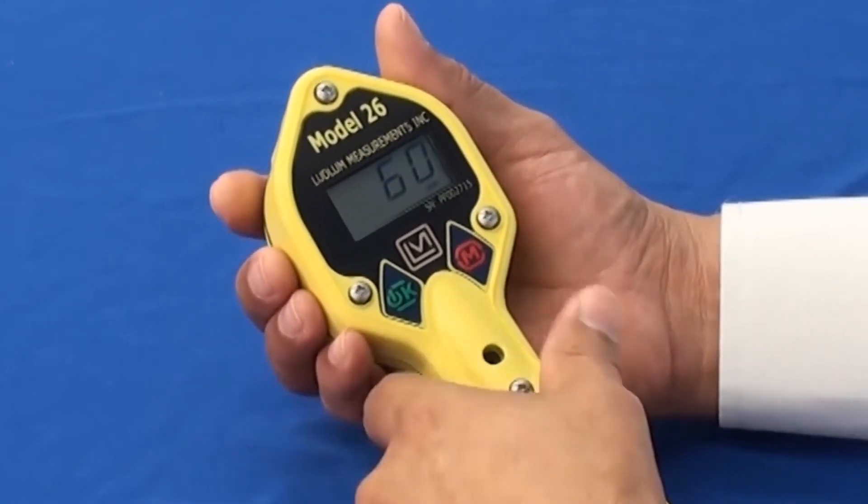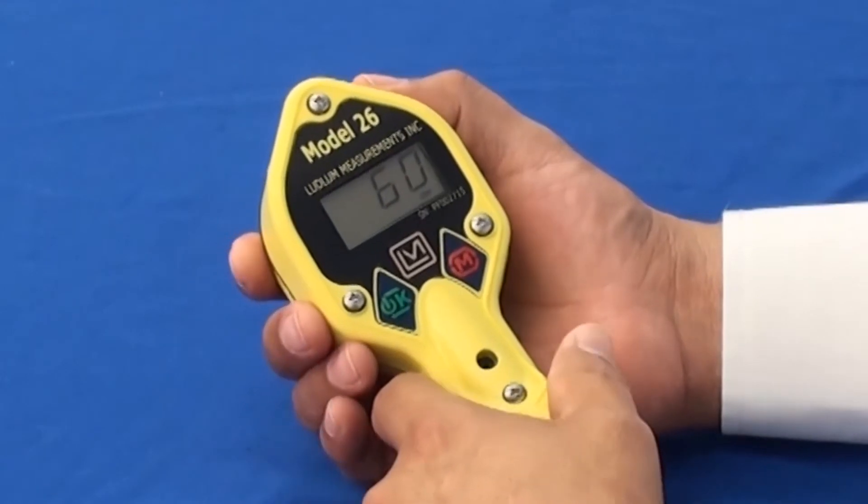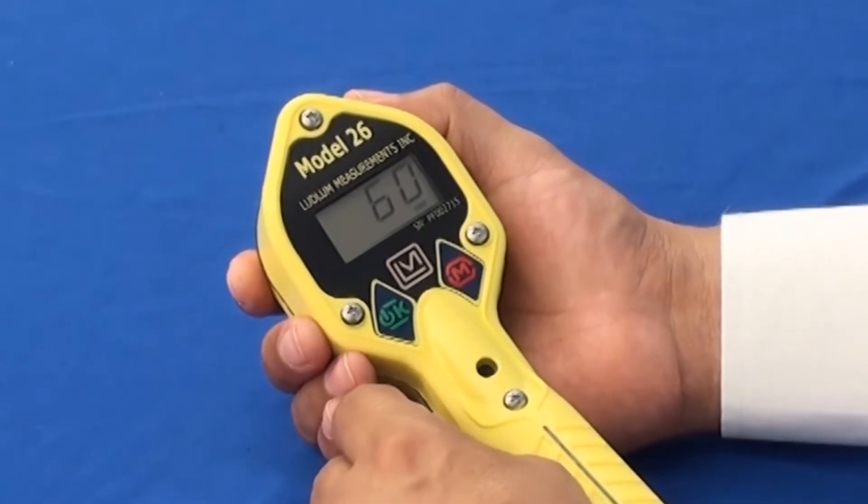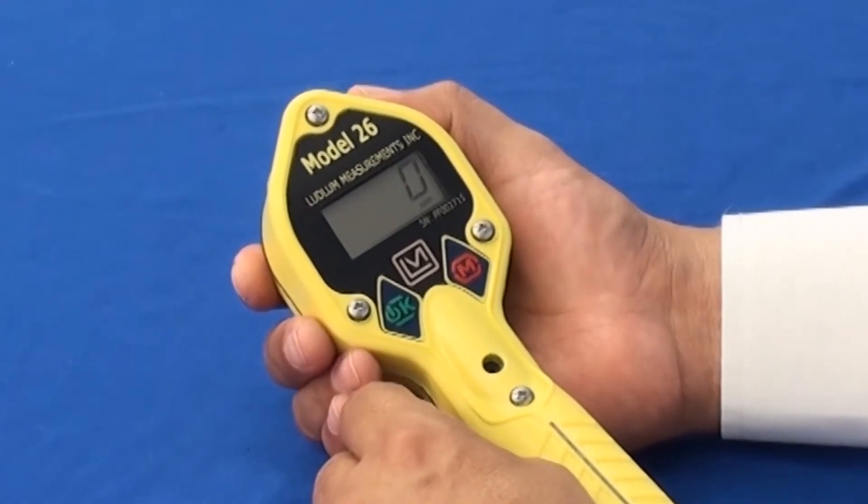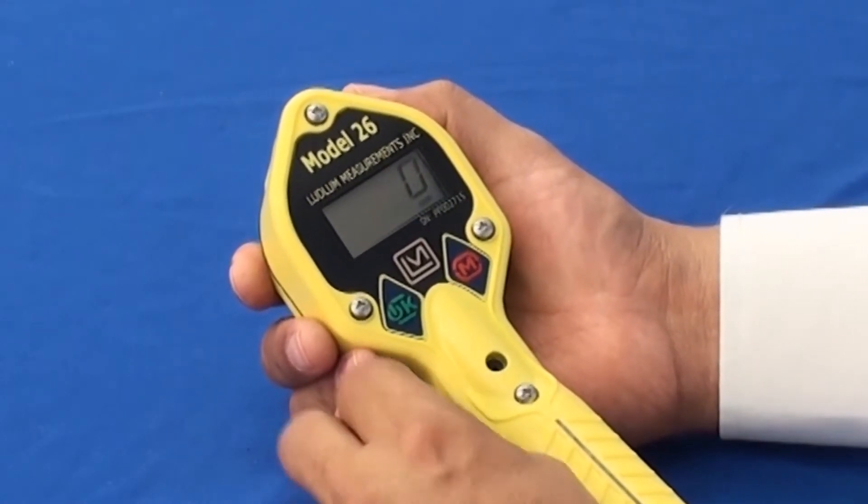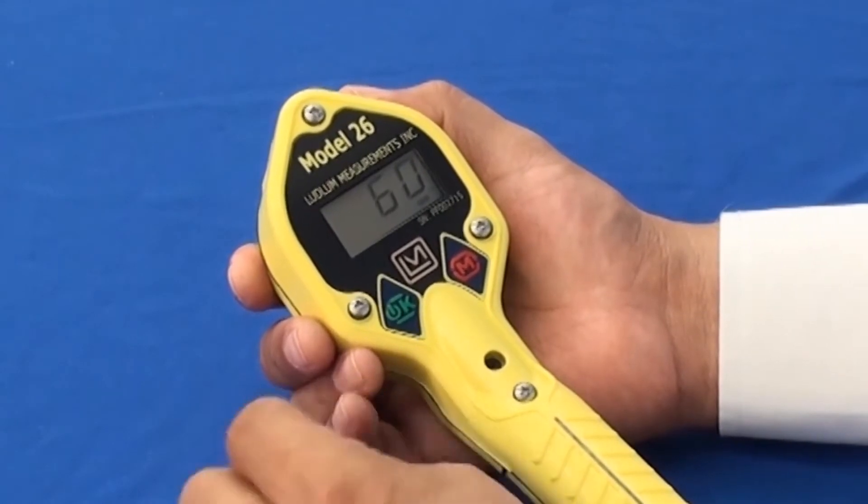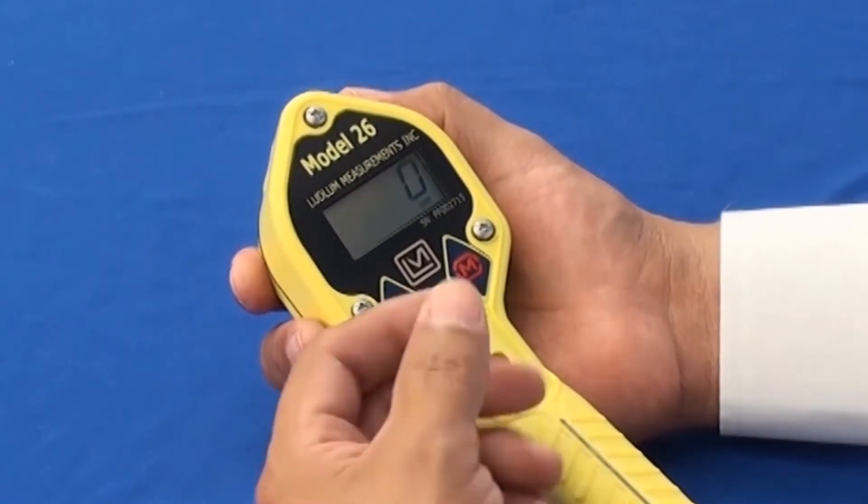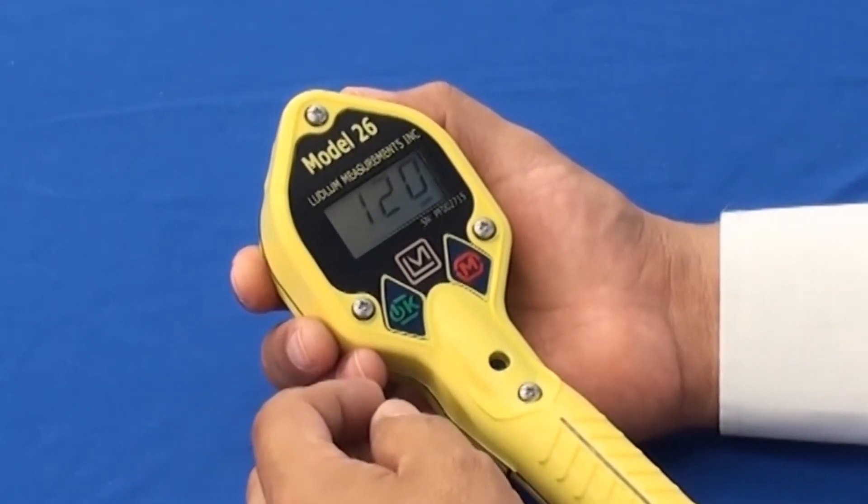Currently, we're reading out in counts per minute. The Model 26 has the capabilities of displaying either counts per minute or counts per second. I will show you how to manipulate the settings by way of getting into the setup mode.